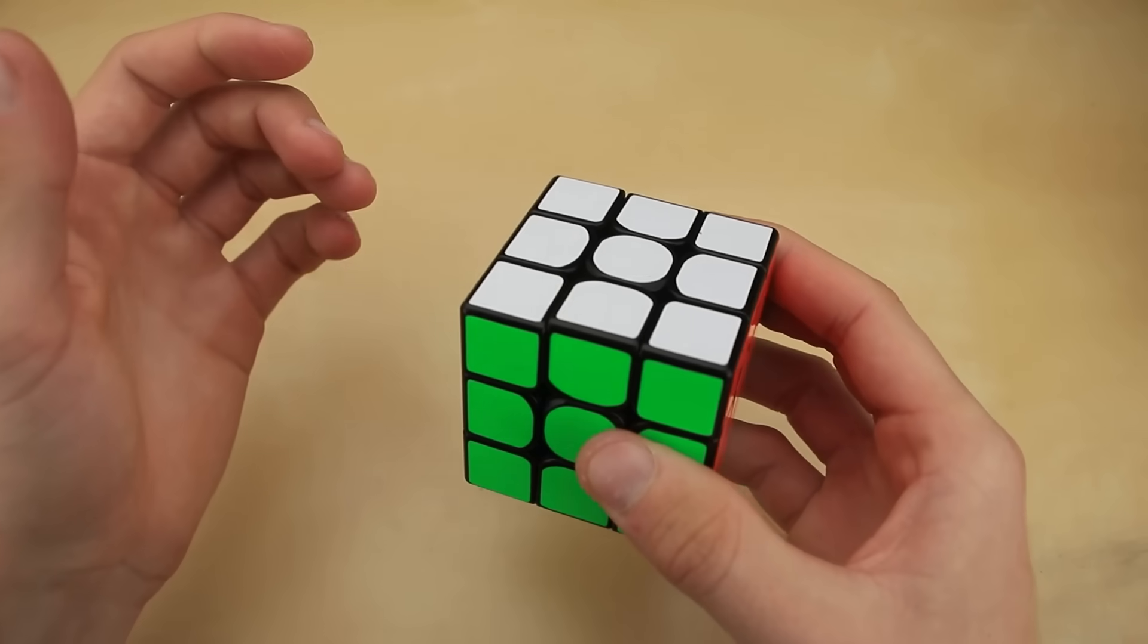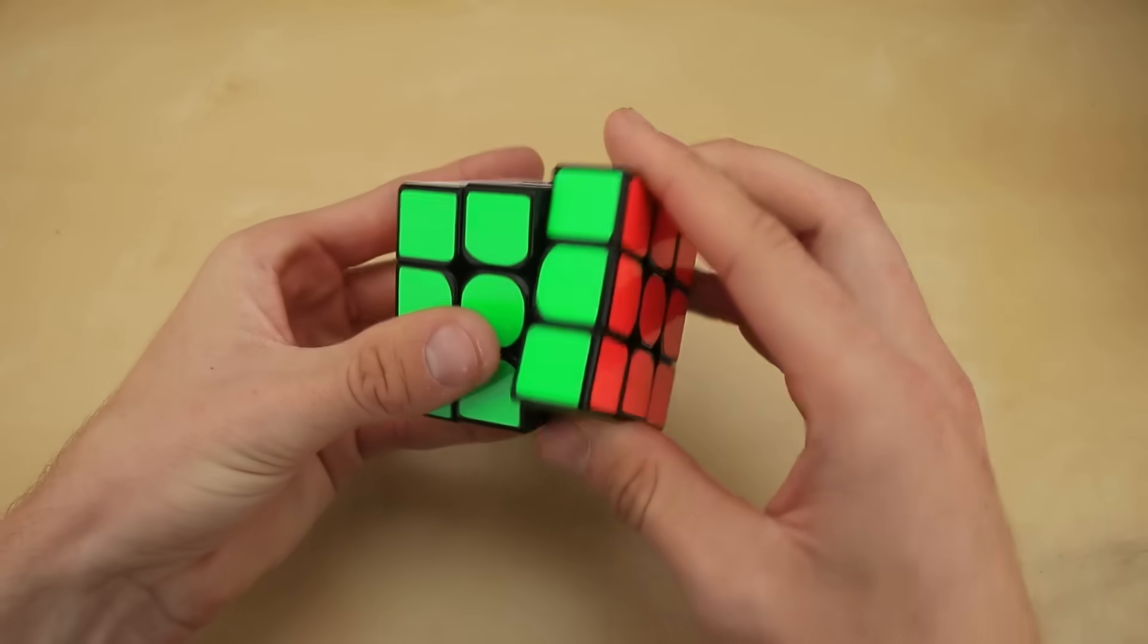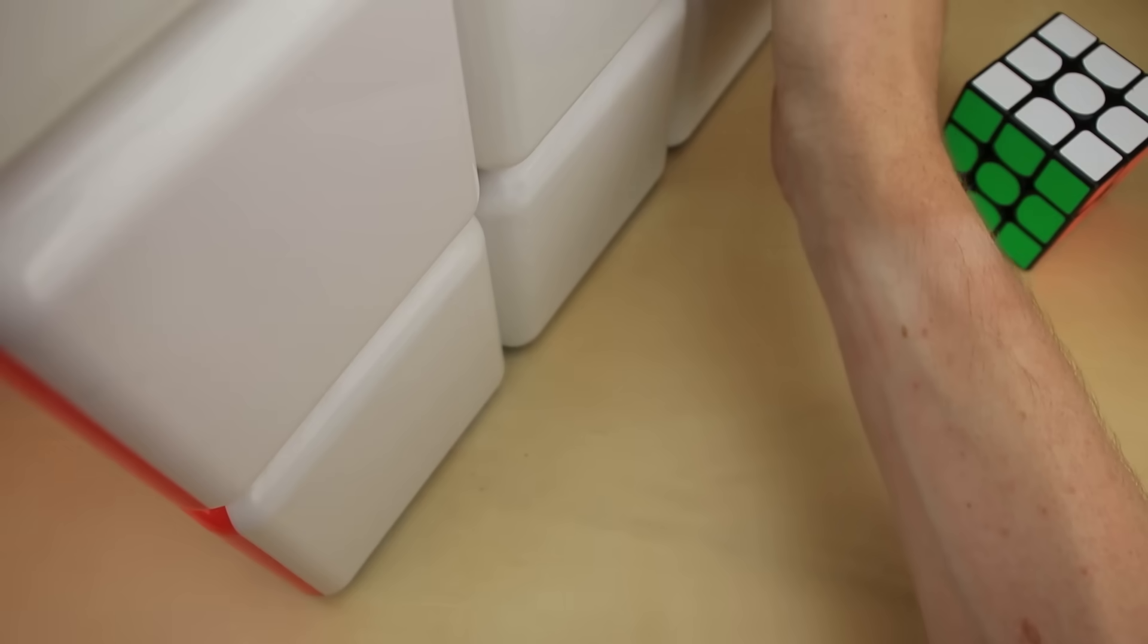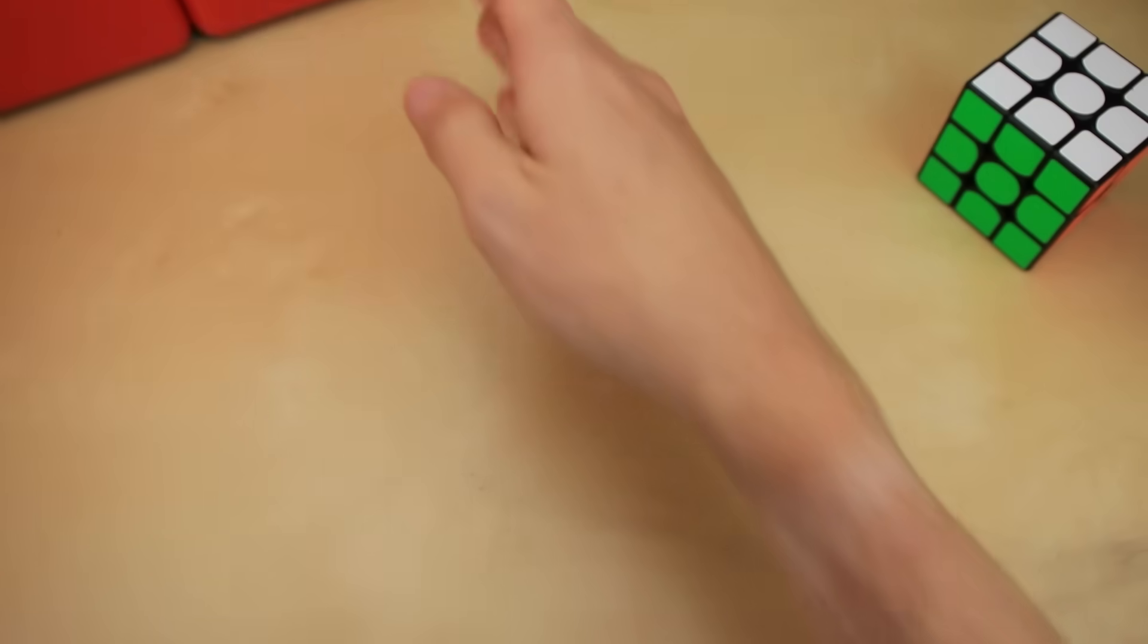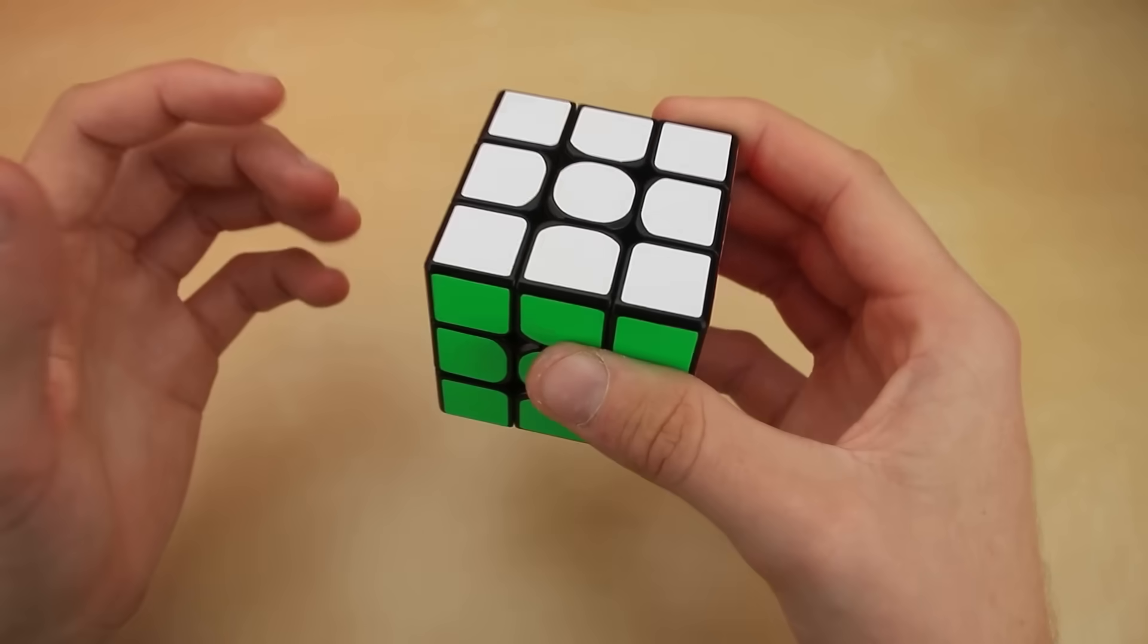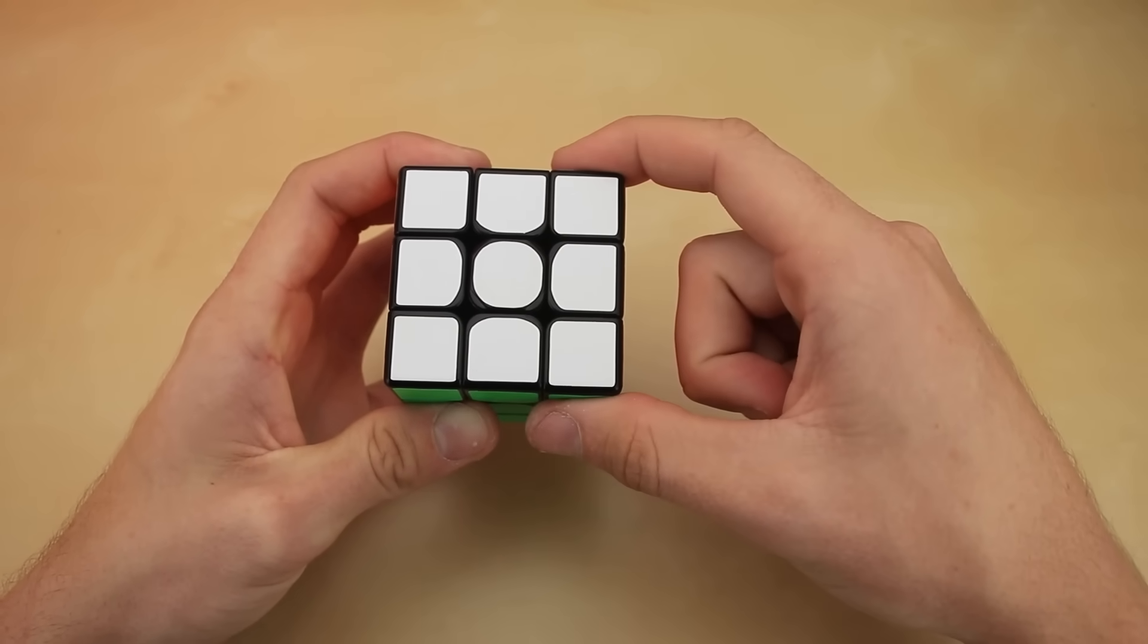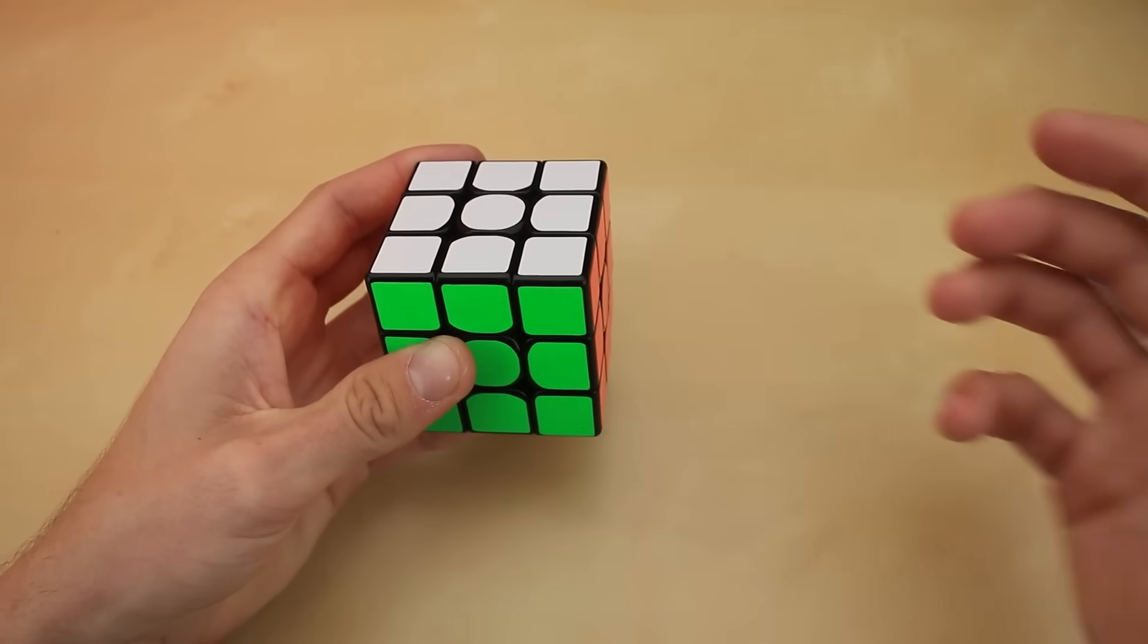Well first you have to define what you mean by world's heaviest Rubik's Cube. Of course, it has to be a fully functional 3x3, which this cube is. But so is this cube, which weighs over twice as much and doesn't even fit in the camera frame. So obviously we also have to specify the size. In order to be considered the world's heaviest Rubik's Cube, it can't be any bigger than a normal sized Rubik's Cube, which is 57 millimeters.